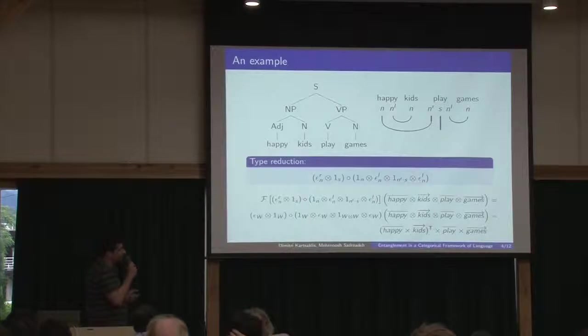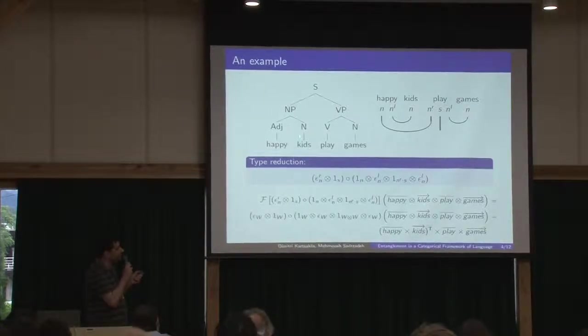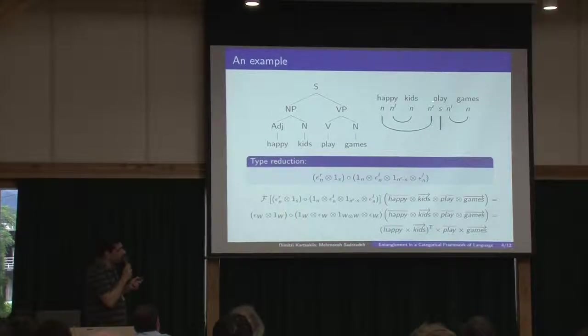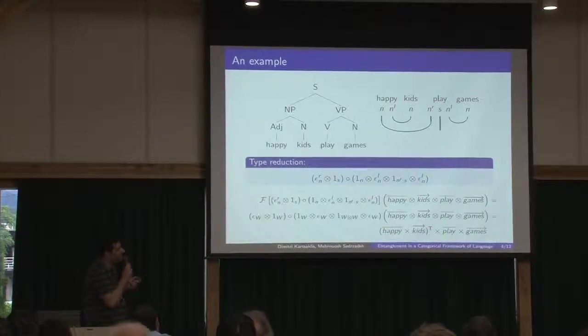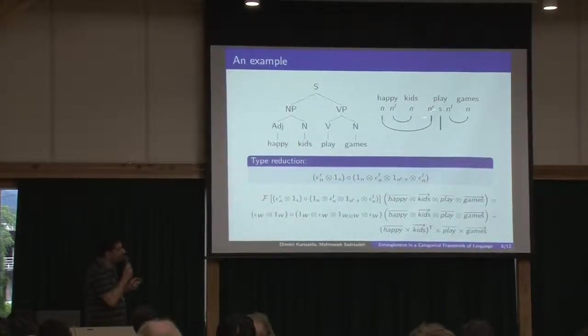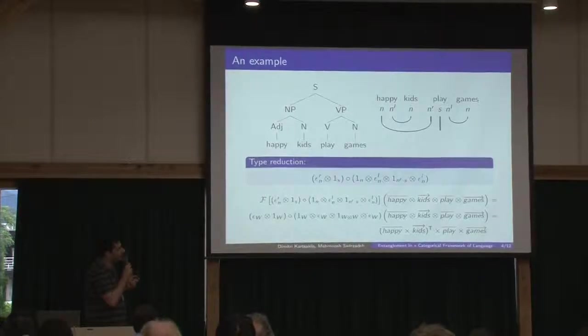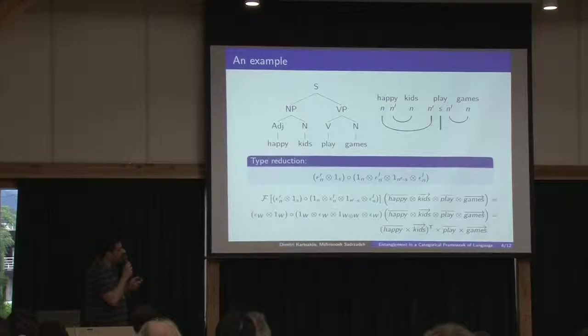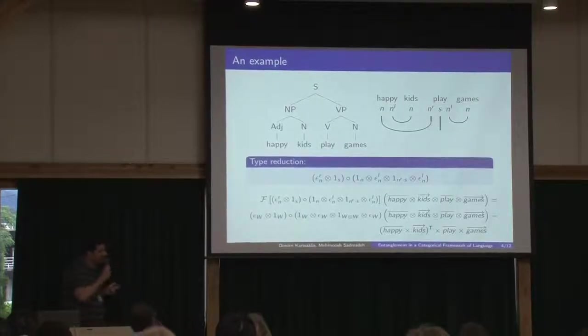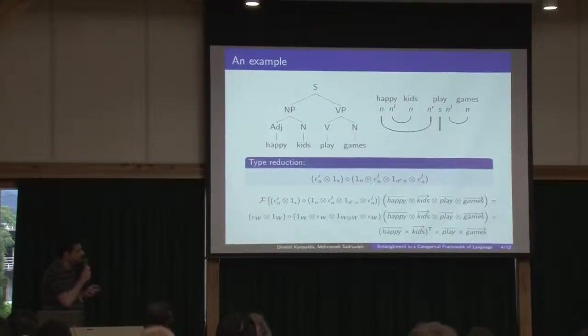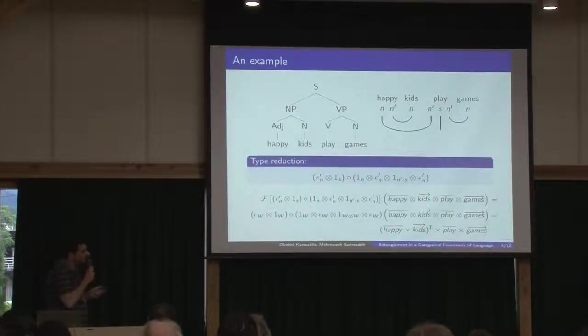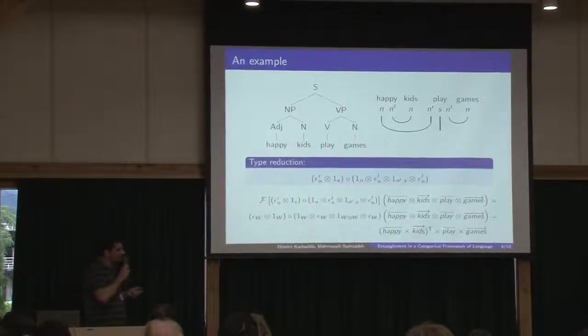And this is an example. This is a typical context for a very simple sentence. This is the corresponding pregroup derivation. So basically we see which adjoint is joined with which. And our type reduction in this case is just this morphism here.